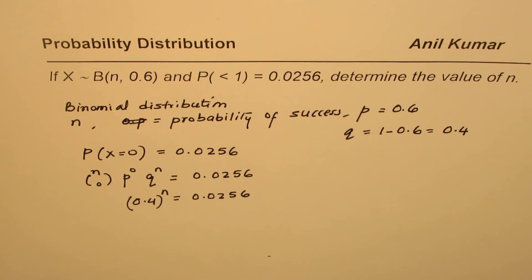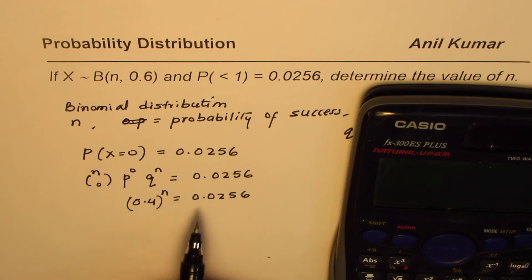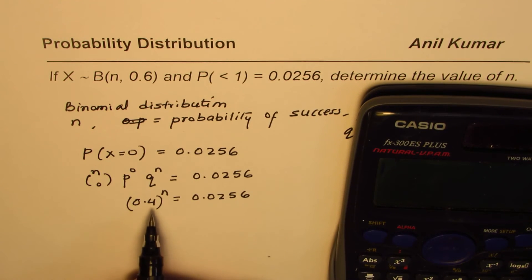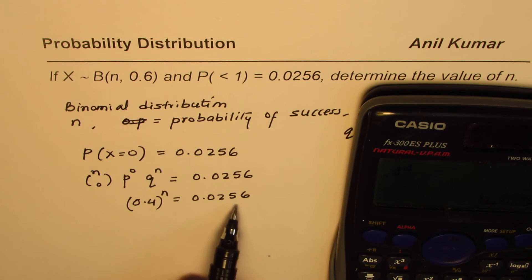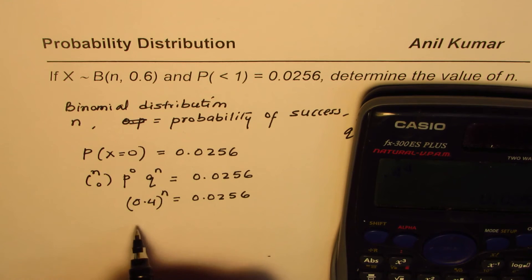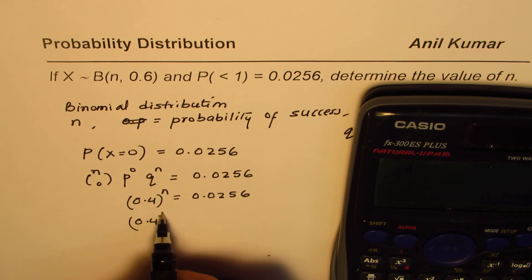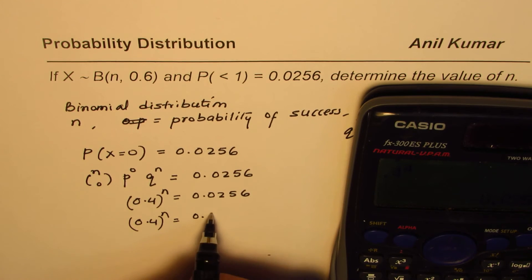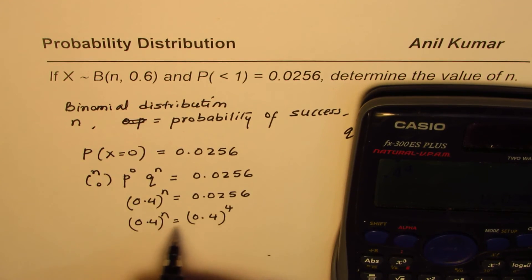Now, to find the value of n, what we can do? At this stage, you can take log and then do it, or you can do trial and error. You can write 0.0256 as a power of 0.4. So you know 4 times 4 is 16, so you can try this as 0.4 to the power of 4 equals 0.0256. So the right-hand side could be written as 0.4 to the power of 4, and comparing, we get n equals to 4.